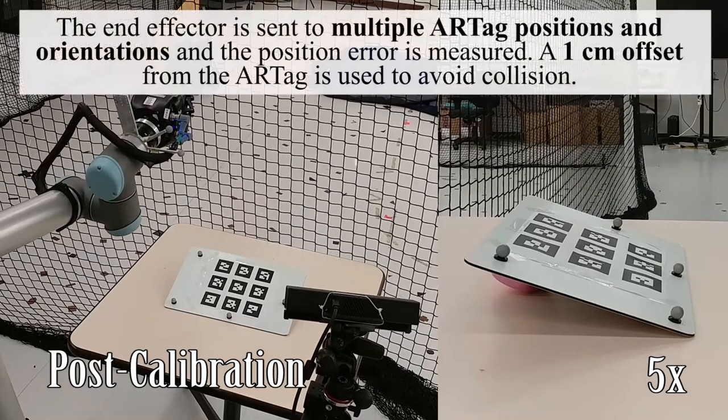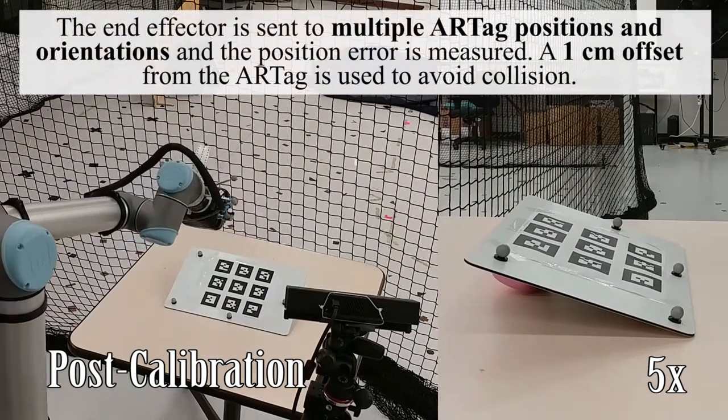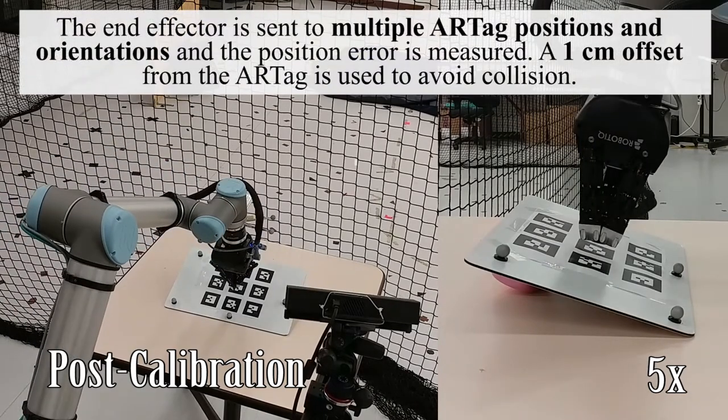The end effector is sent to multiple AR tag positions and orientations, and the position error is measured. A 1 cm offset from the AR tag is used to avoid collision.